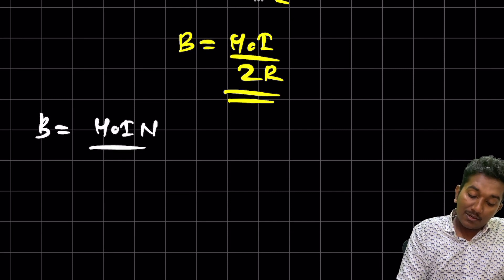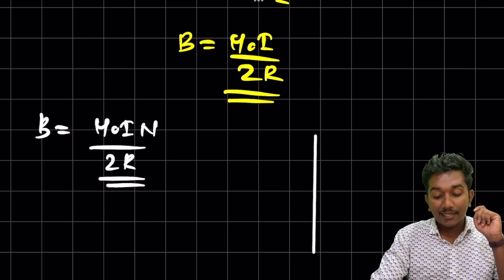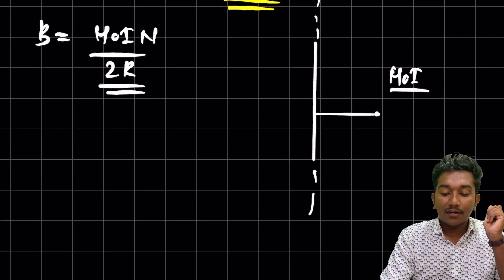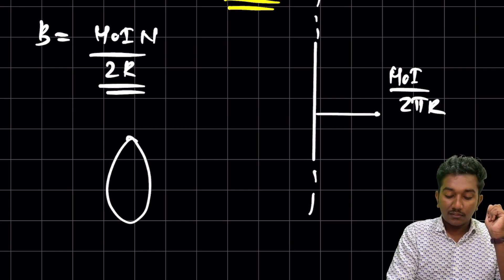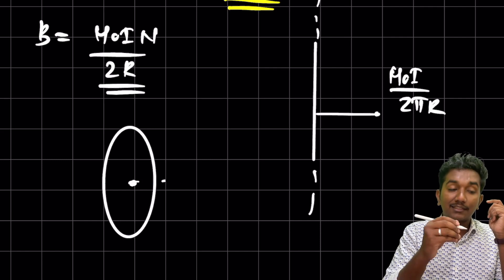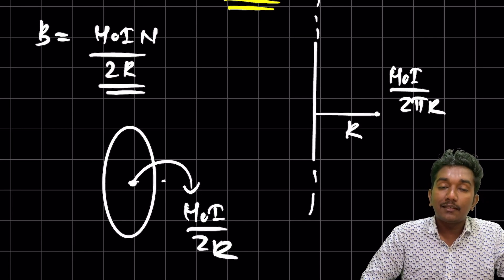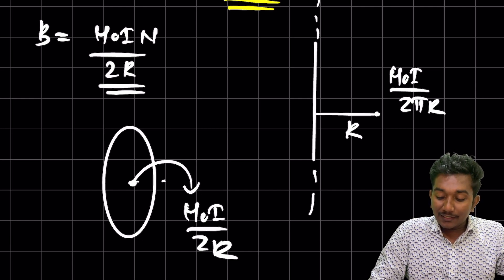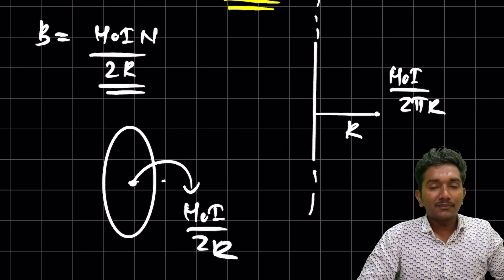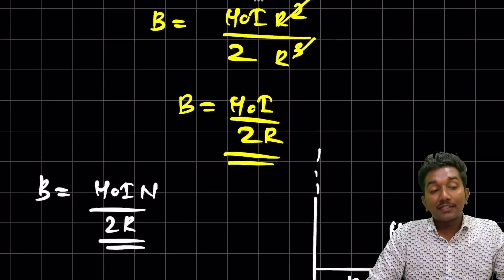If there are N turns, the magnetic field at the center becomes B = μ₀Ni / 2R. Now, a useful memory trick: for an infinitely long straight current carrying conductor, the magnetic field at distance r is μ₀i / 2πr — it has π. For a circular coil at the center, B = μ₀i / 2R — no π. Something circular has no π; something straight has π.